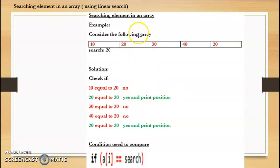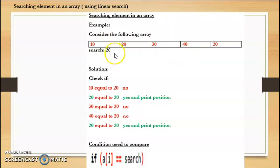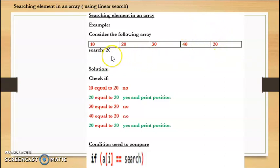Then it will check if 30 is equal to 20. We know 30 is not equal to 20, so it moves to the next element. It checks if 40 is equal to 20 — also not equal. So it goes to the next element and checks if 20 is equal to 20. Yes, 20 is equal to 20, so it will print that 20 is present at position 5.